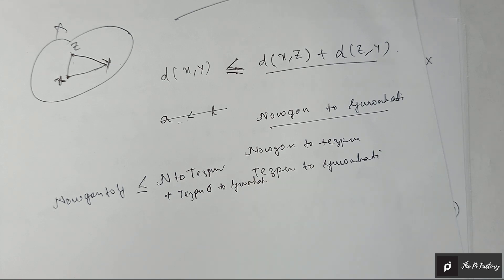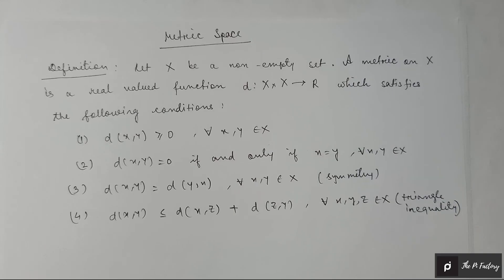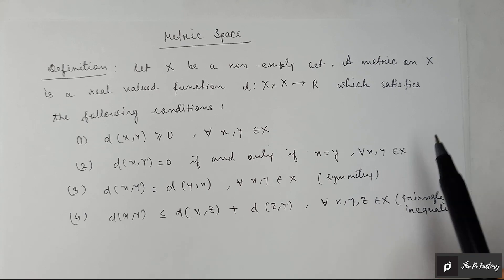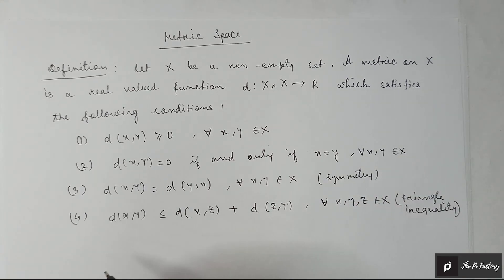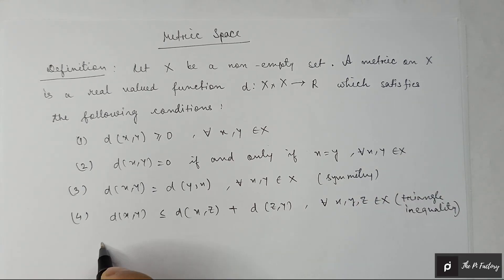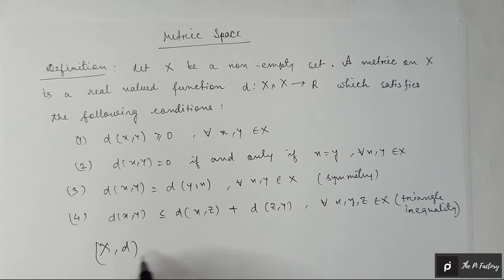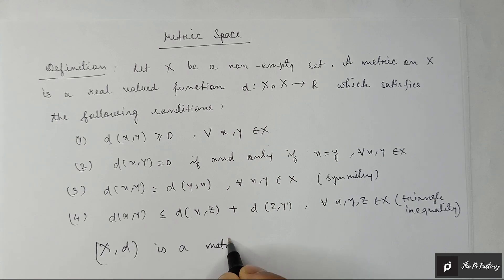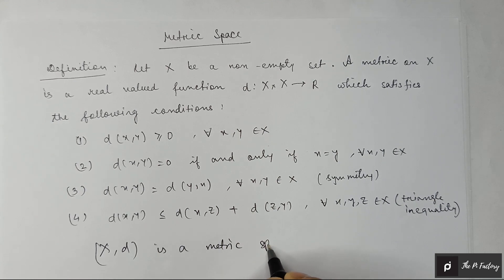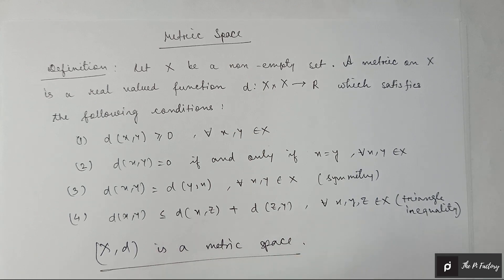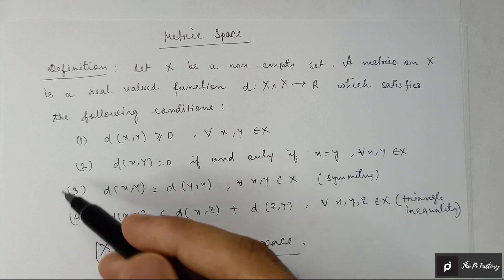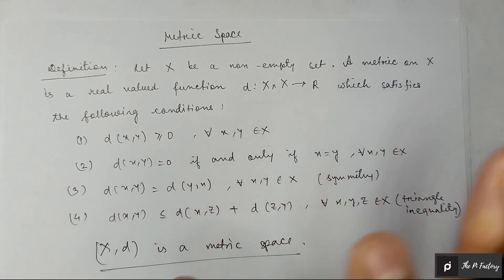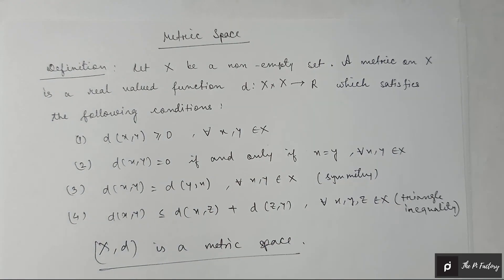These are the four conditions which we have to satisfy. If all these four conditions are satisfied, then we can say (X, d) is a metric space.